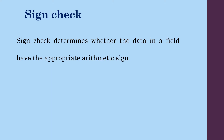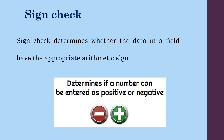Sign check determines whether the data in a field has the appropriate arithmetic sign. It can be either positive or negative.